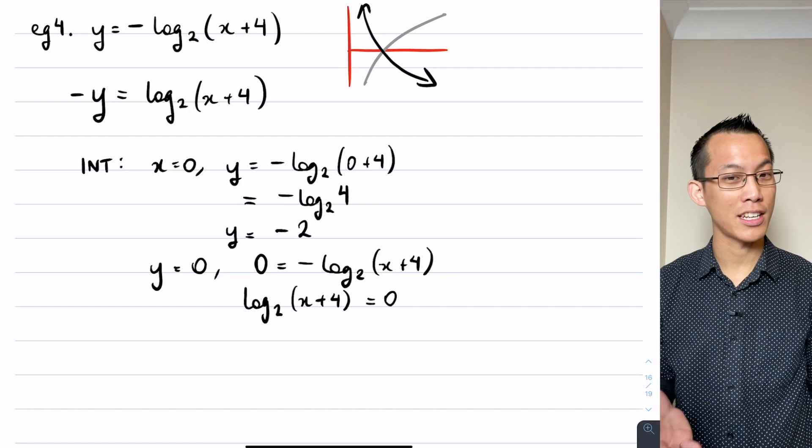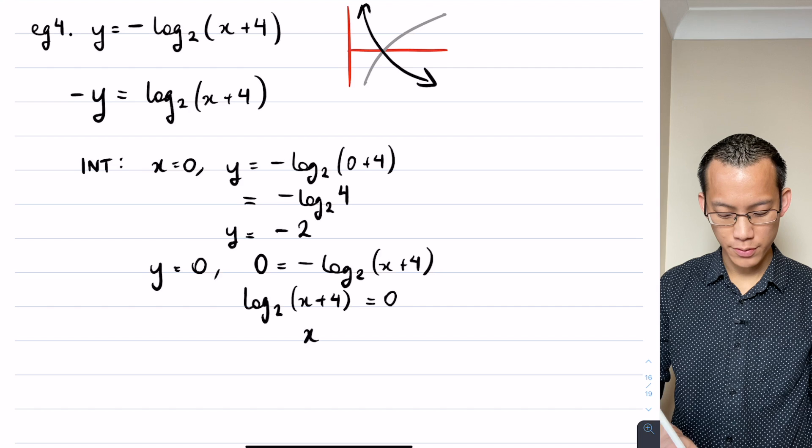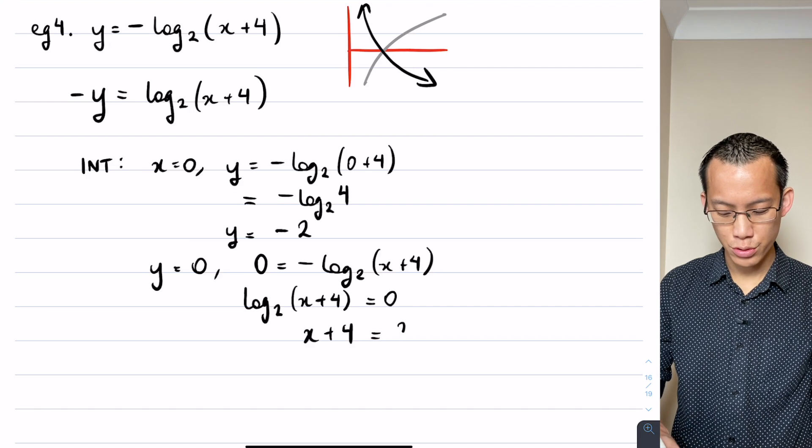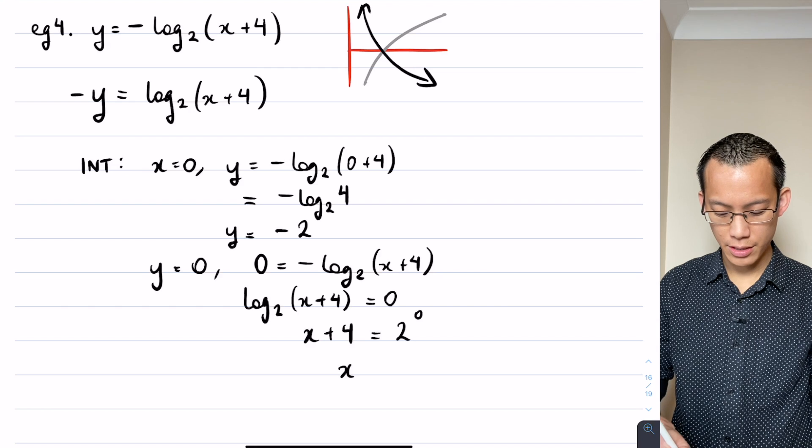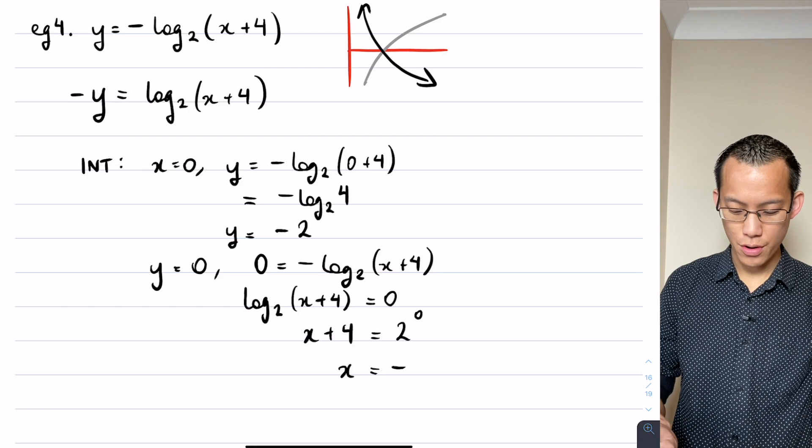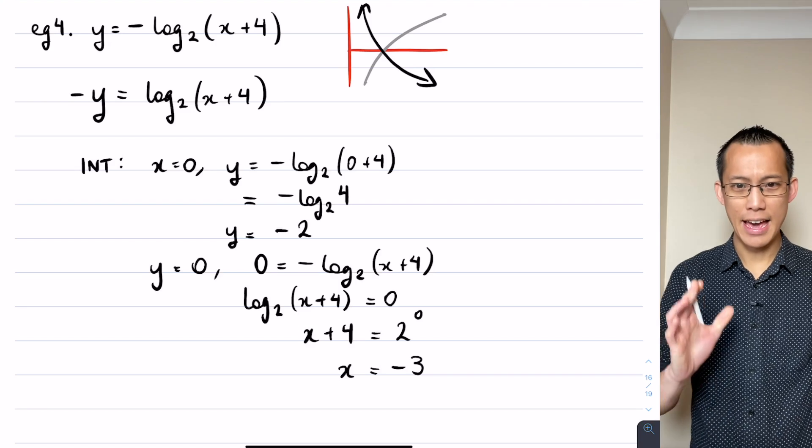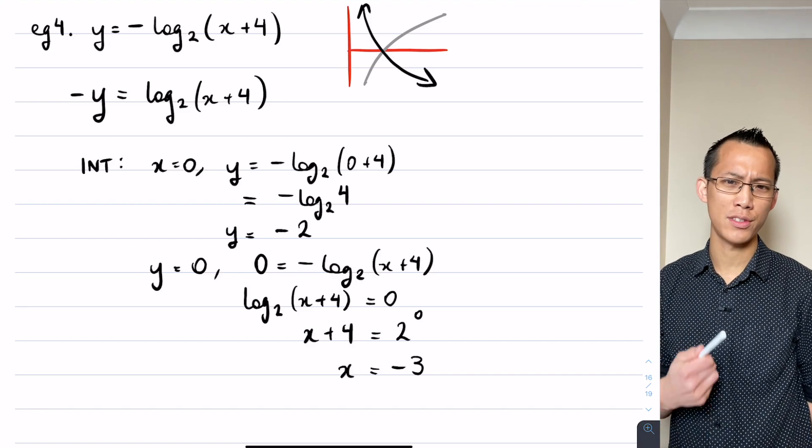So that tells me that x plus 4 will be equal to 2 to the power of 0. So now I'm going to get x equals - subtract 4 from both sides - 1 take away 4 is negative 3. And if I just think about my intuition, I'm like, oh that makes sense, because I thought I was moving 4 units to the left, so unsurprisingly my x-intercept has gone into the negatives.